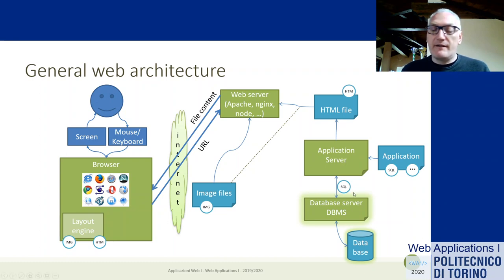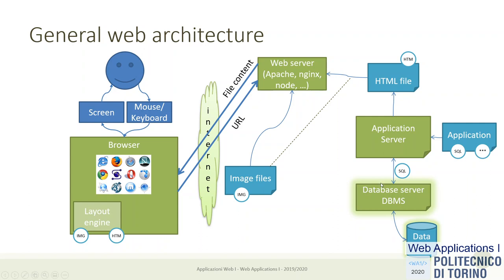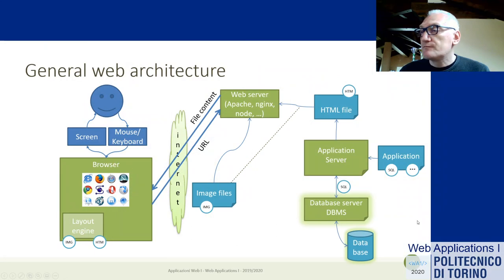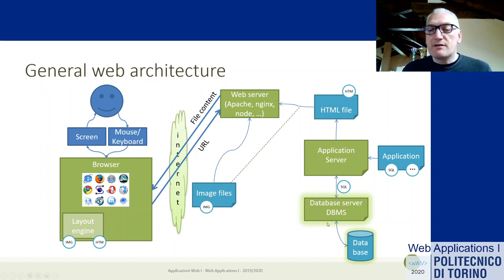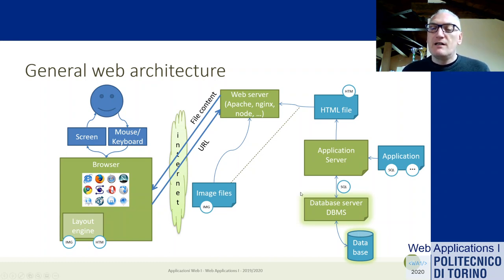We have a block called database, and the color convention still holds: the DBMS server is a standard component — maybe MySQL, SQLite, Oracle, or another kind of database. It's already existing software. The database contents are my design — I need to design the schema, load the data, and so on. Blue is custom, green is standard. So this programmer must learn the environment and language of the application, must also learn SQL to interact with the server, and of course must know HTML because that is what has to be generated.